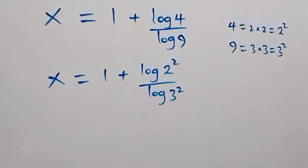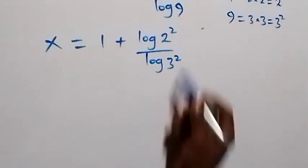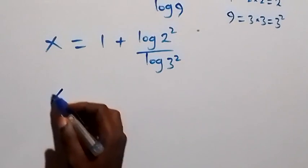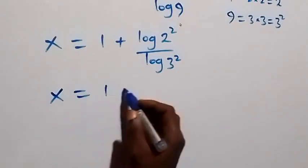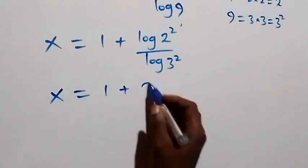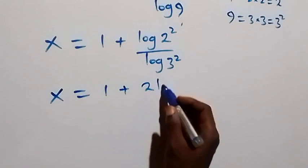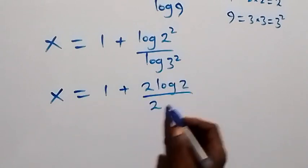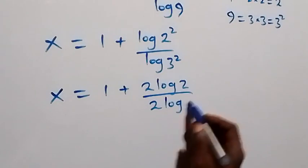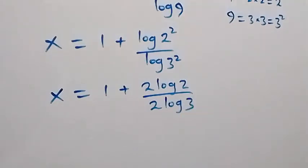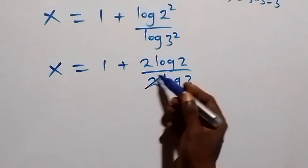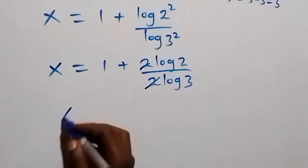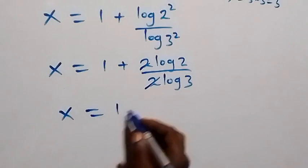From here we apply the power law of logarithms: the 2 comes down in front, and likewise for the denominator. So we have x equals to 1 plus 2 log 2 over 2 log 3. The two cancels each other, giving us x equals to 1 plus log 2 over log 3.